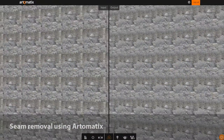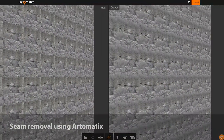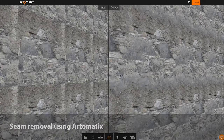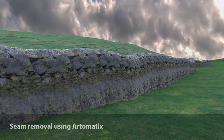Artomatics can intelligently remove texture seams across multiple channels. In this render, the seams are gone, but we can still see repeating in the texture.